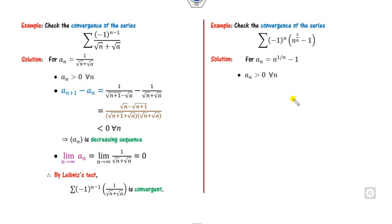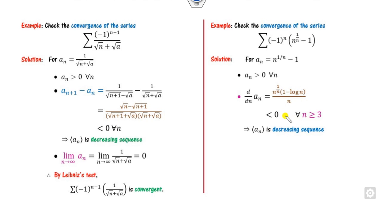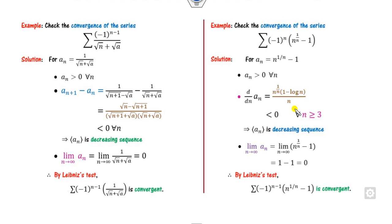In this case, a_n is n^(1/n) minus 1, which is positive for n ≥ 2 since when n=1 it equals 0 and for n=2 it is positive. Taking the derivative to prove decreasing — sometimes a_{n+1} minus a_n is not easy to compute directly — we find the derivative is negative for n ≥ 2 (since ln(2) ≈ 0.3 is positive, making the expression less than 0 for n > 3). Also, the limit of n^(1/n) as n → ∞ is 1, so n^(1/n) minus 1 → 0. Therefore by the Leibniz test, this series is convergent.